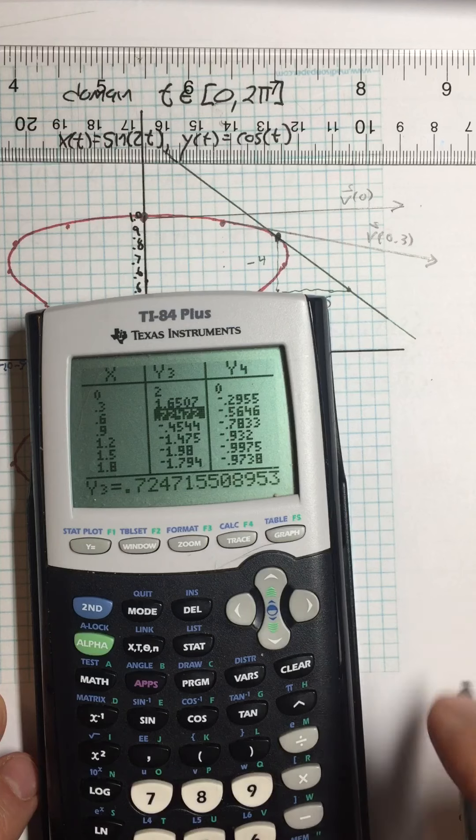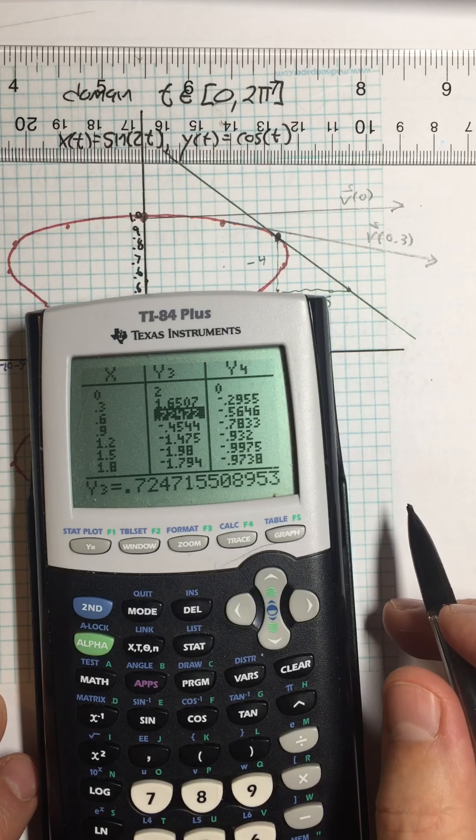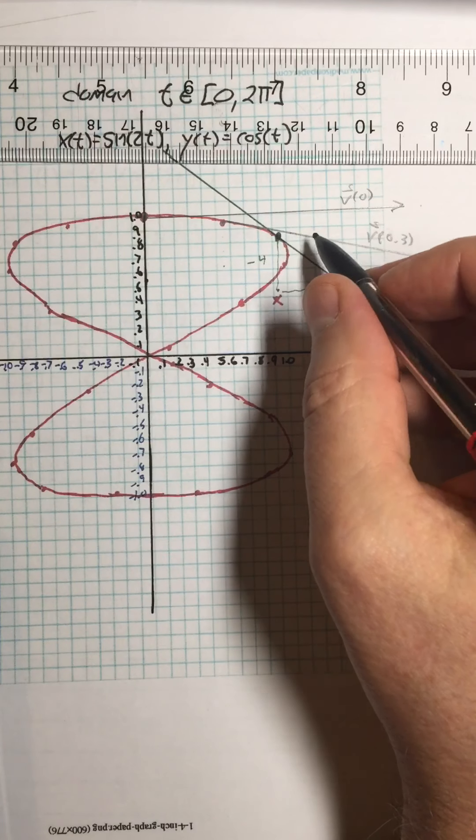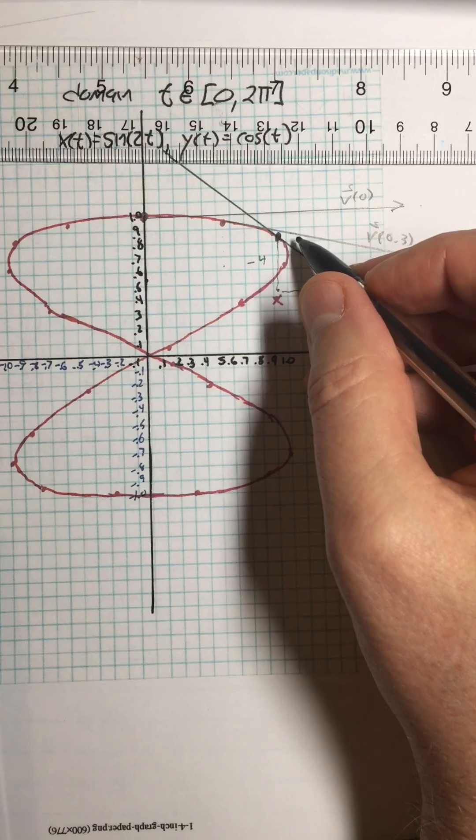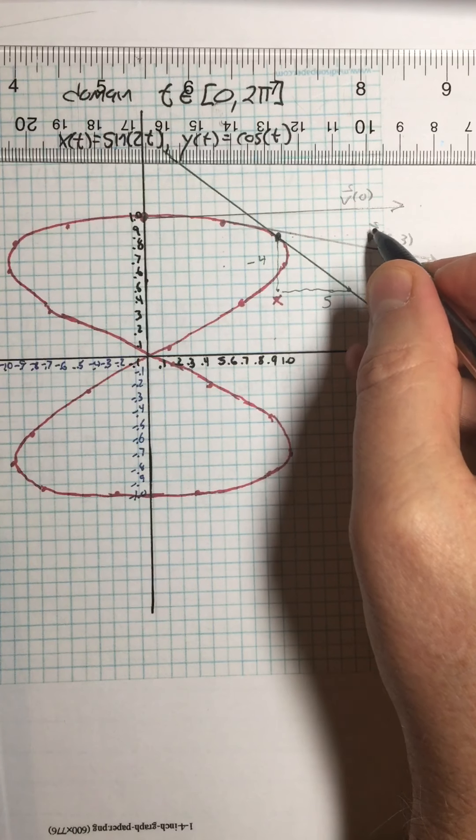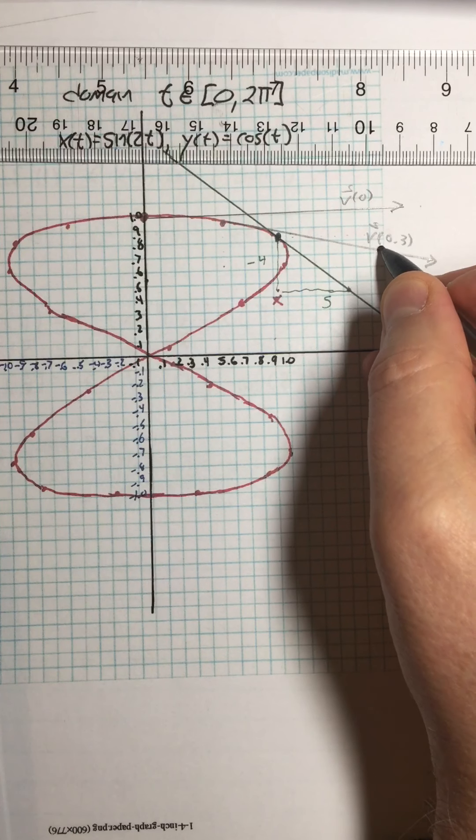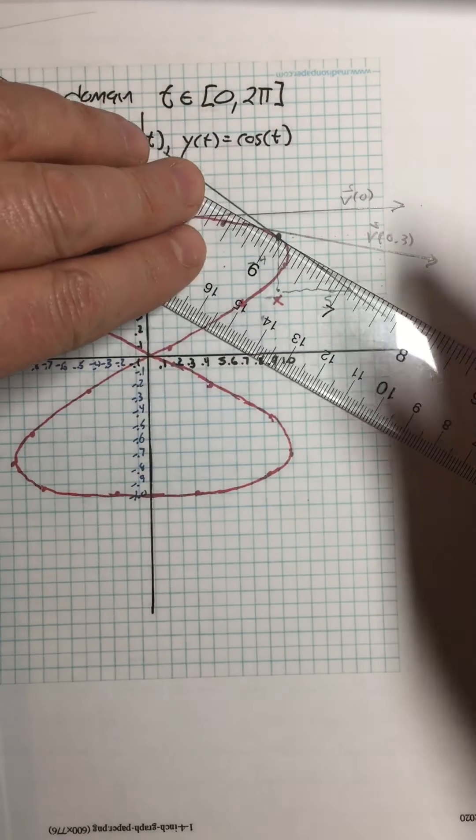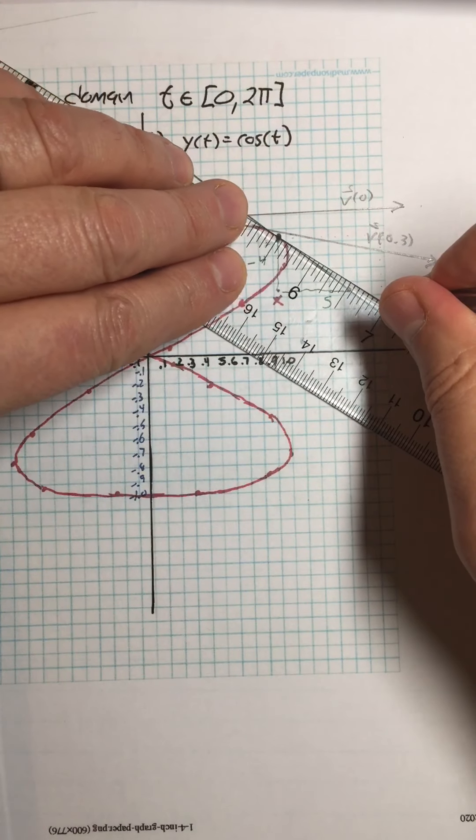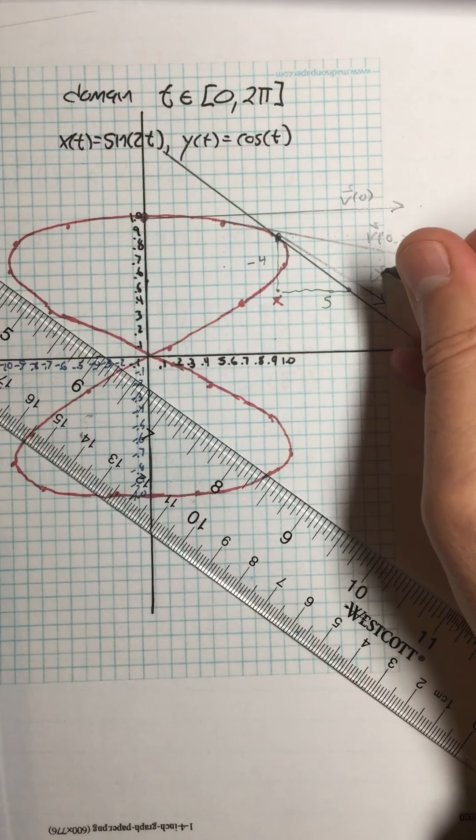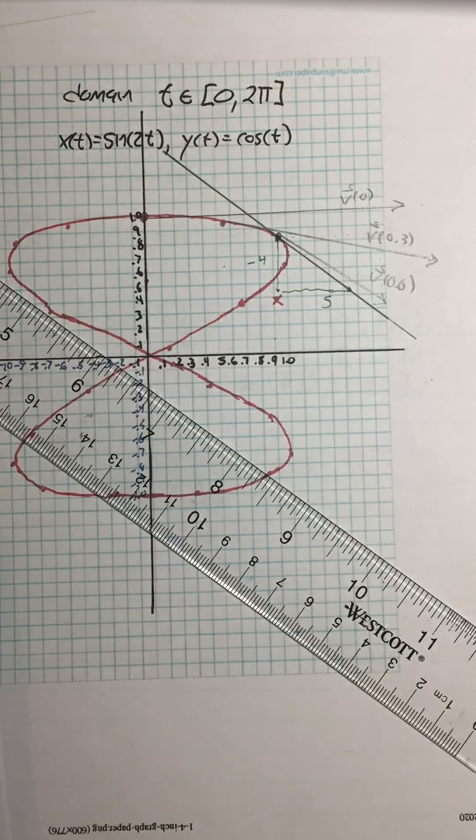So velocity at 0.6, I have 0.7, negative 0.5. That's getting a little more reasonable to draw. So 0.7 would be, I think I'm here, 1, 2, 3, 4, 5, 6, 7, negative 0.5, 1, 2, 3, 4, 5. So just roughly speaking, there's that velocity vector at t equals 0.6.